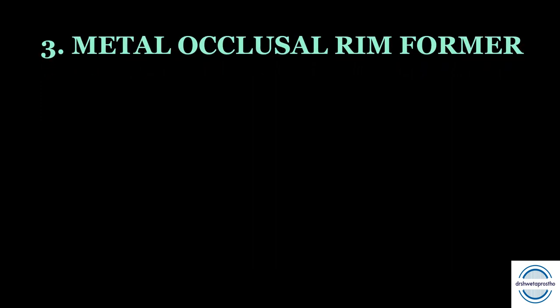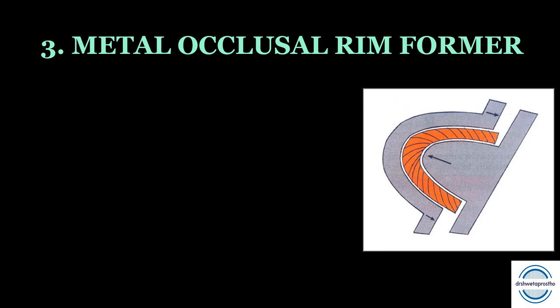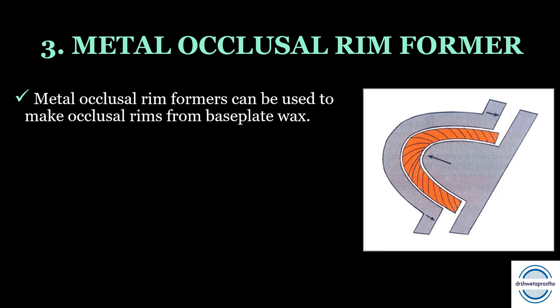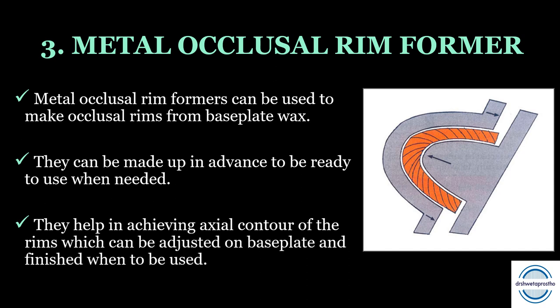Metal occlusal rim formers are molds used to form occlusal rims. With the help of the base plate or modeling wax, these rims can be made in advance ready to use — simply sealed onto the base plate when needed. They help achieve the axial contour of the rims, which can be adjusted on the base plate and finished before use.